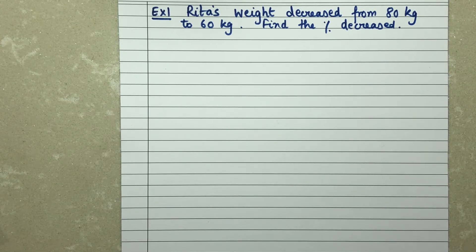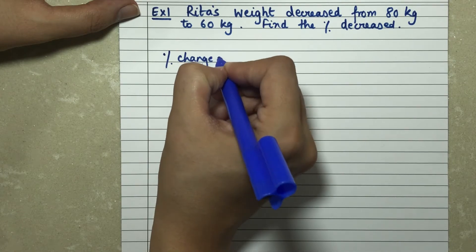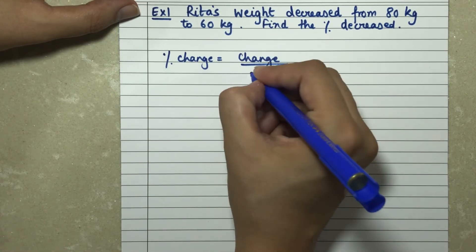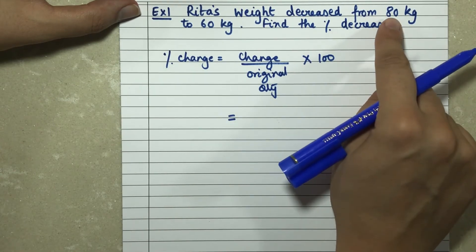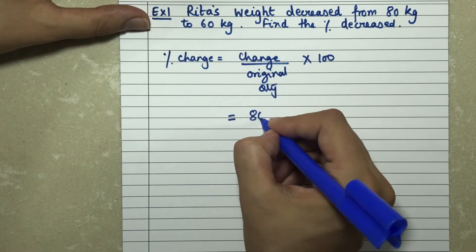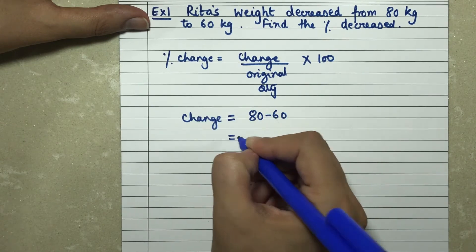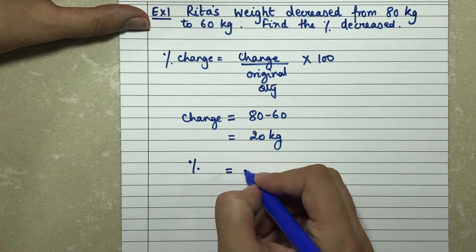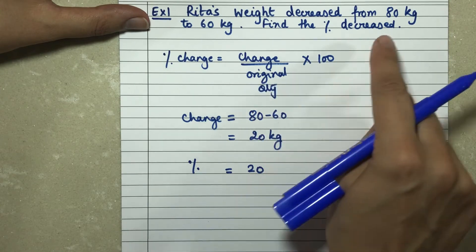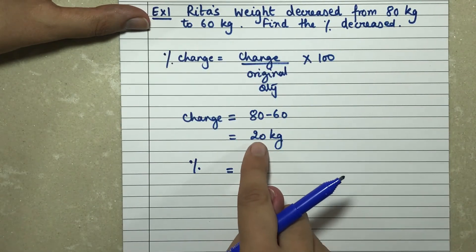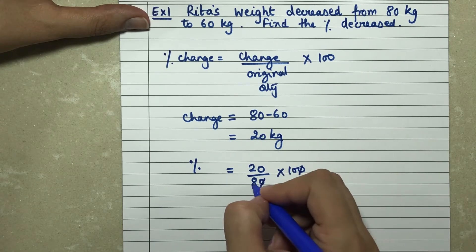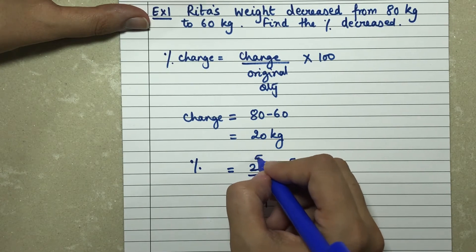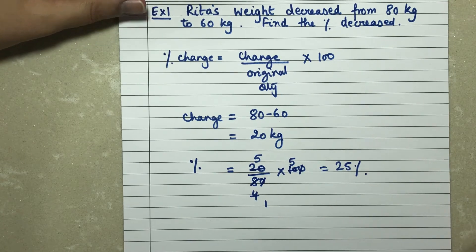Question: Rita's weight decreased from 80 kg to 60 kg. Find the percentage decrease. Percentage change = (change / original quantity) × 100. The change is 80 − 60 = 20 kg. Original quantity is 80 kg. So percentage decrease = (20/80) × 100 = 25%. There was a 25% decrease in her original weight.